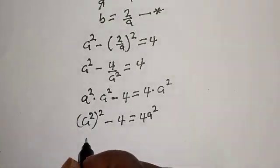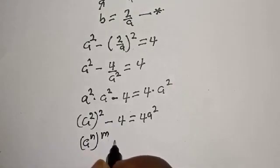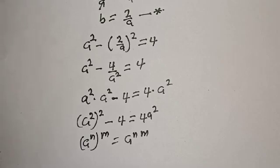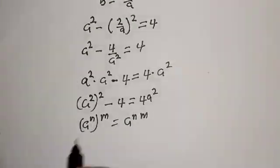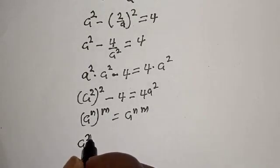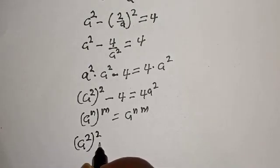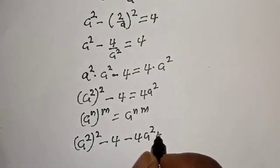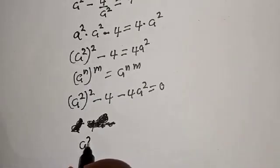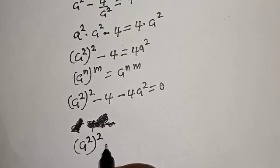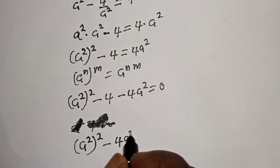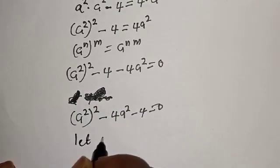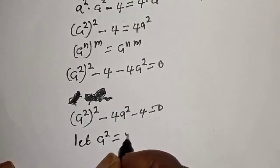Take note that a raised to power n, raised to power m, equals a raised to power nm. So we have a⁴ minus 4a squared minus 4 is equal to 0. Now let's let a squared equal y, giving us y squared minus 4y minus 4 is equal to 0. This is a quadratic equation.